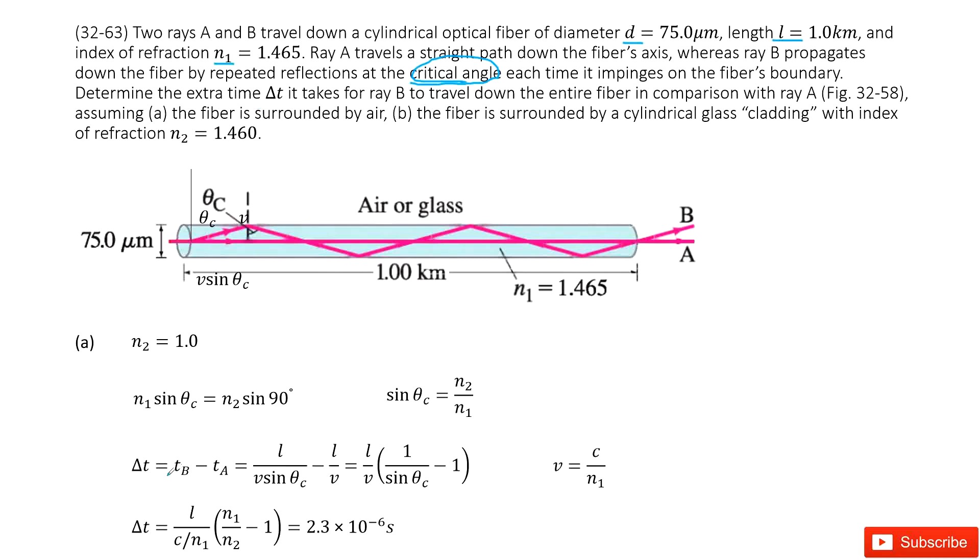We need to find delta T, which equals the time taken for B minus the time taken for A. First, let's look at B. The time taken for B is the distance it travels in the x component divided by its speed in the x component.